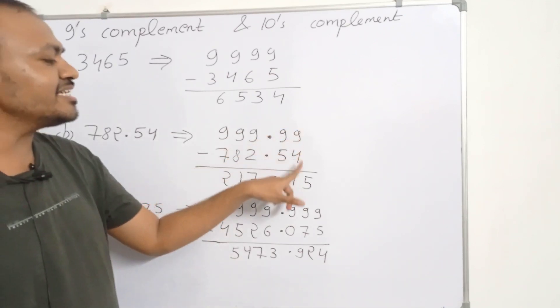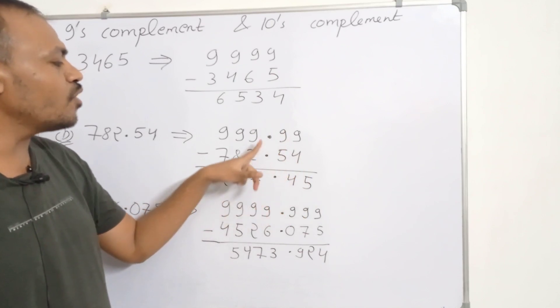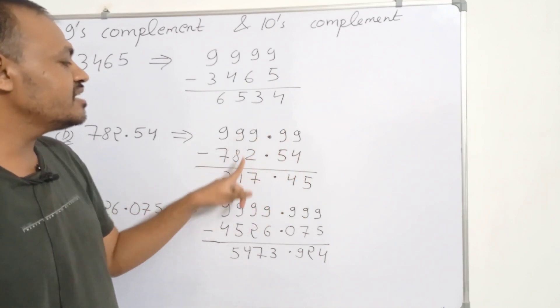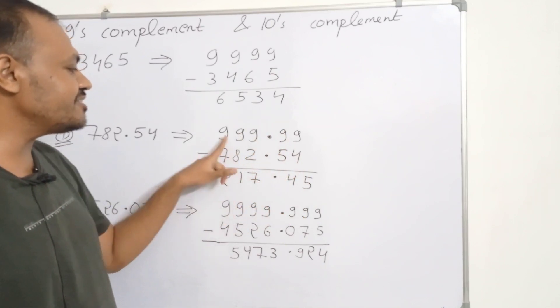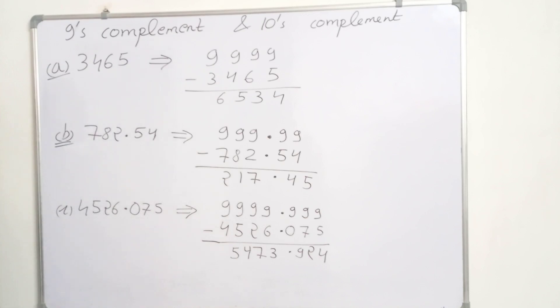9 minus 4 is 5, 9 minus 5 is 4, 9 minus 2 is 7, 9 minus 8 is 1, and 9 minus 7 is 2. So the 9's complement of 782.54 is 217.45.